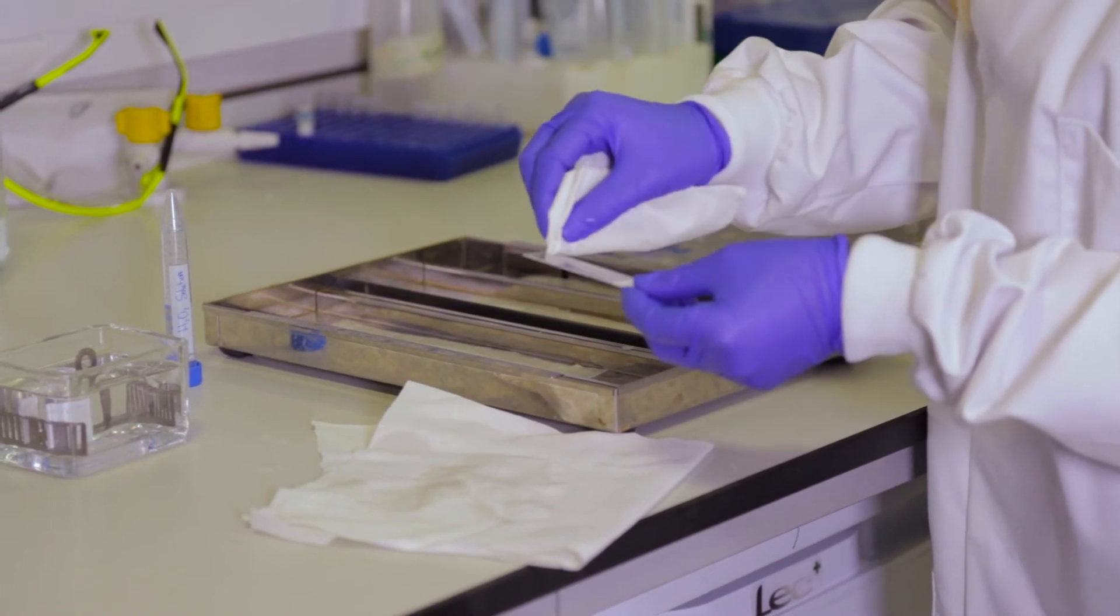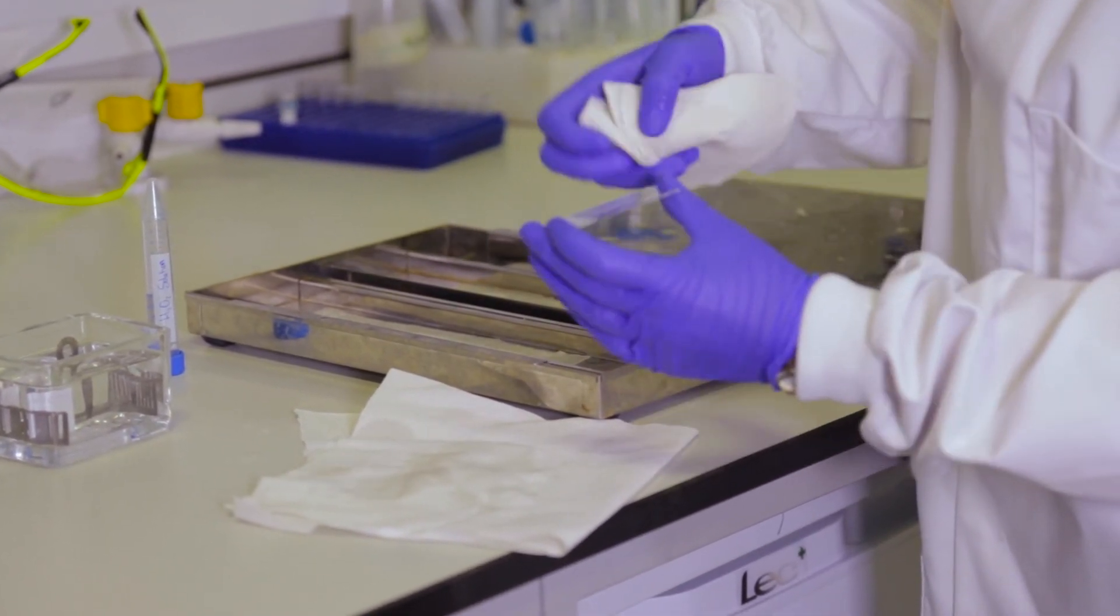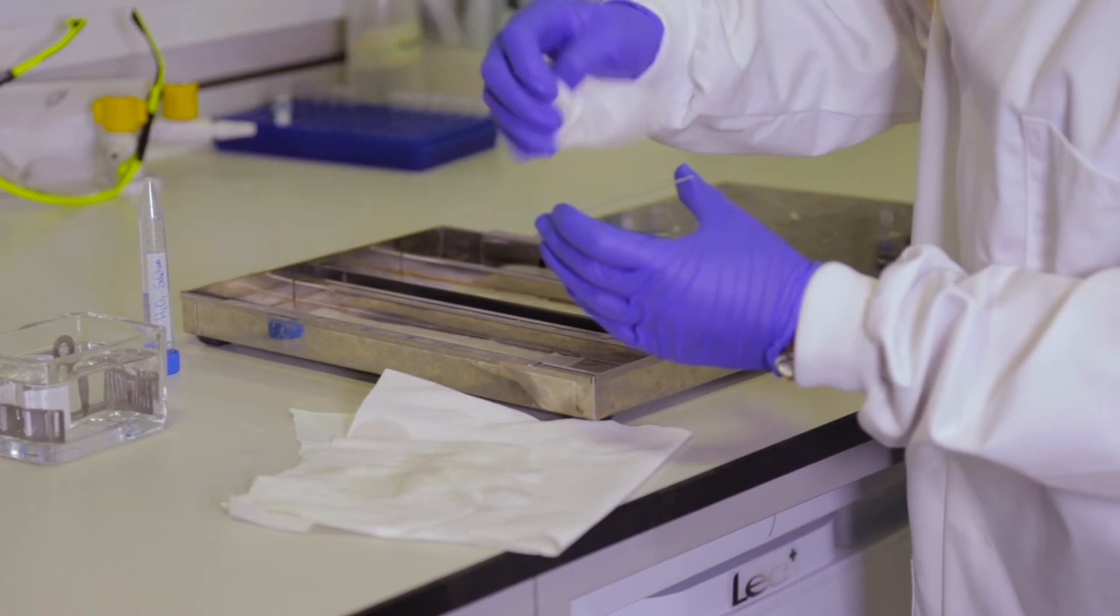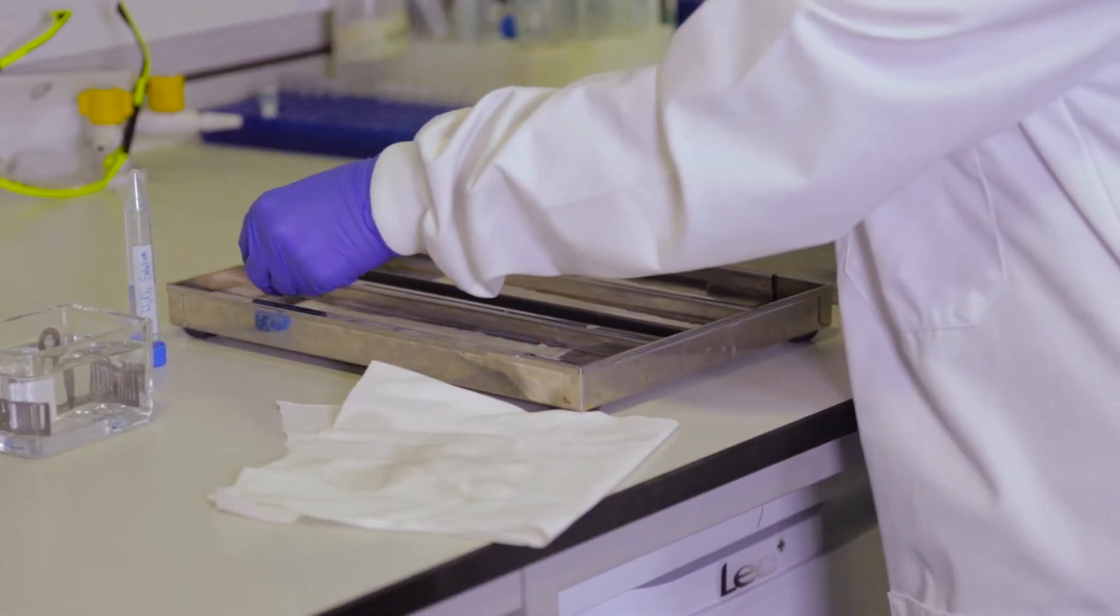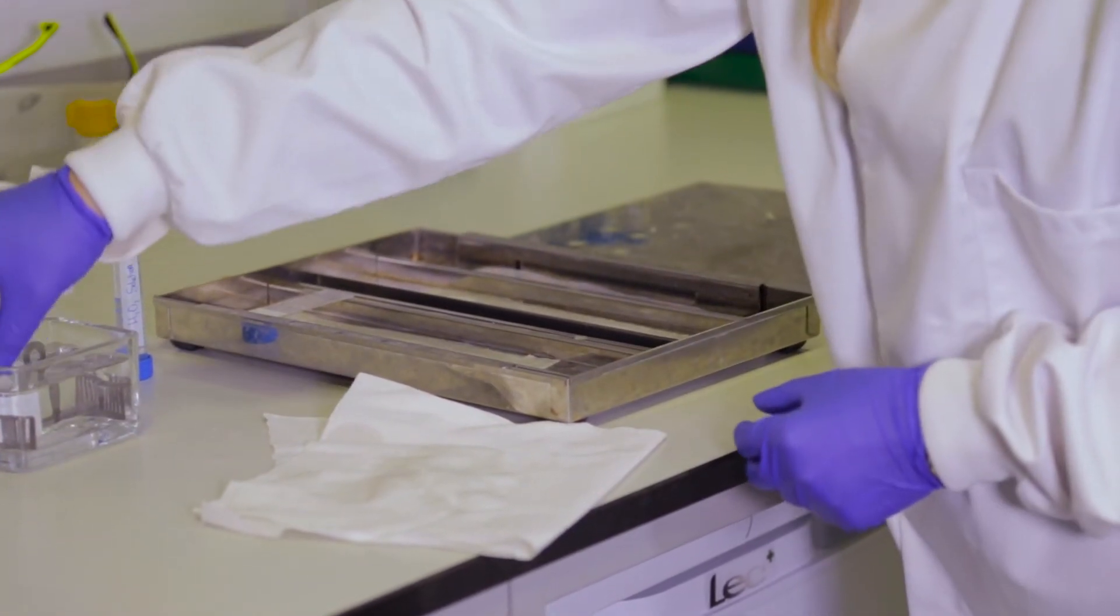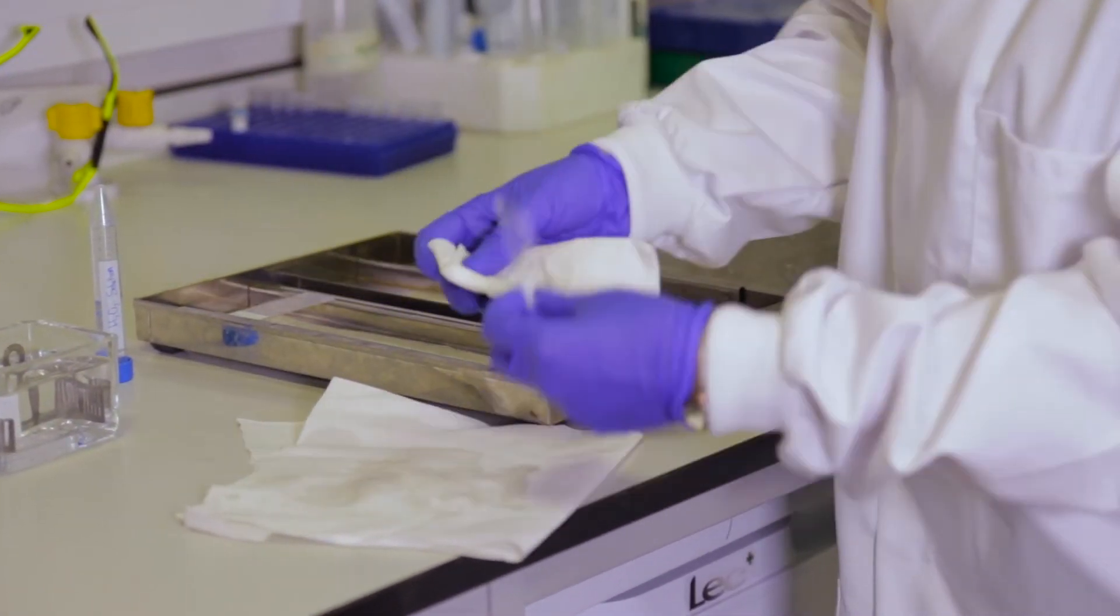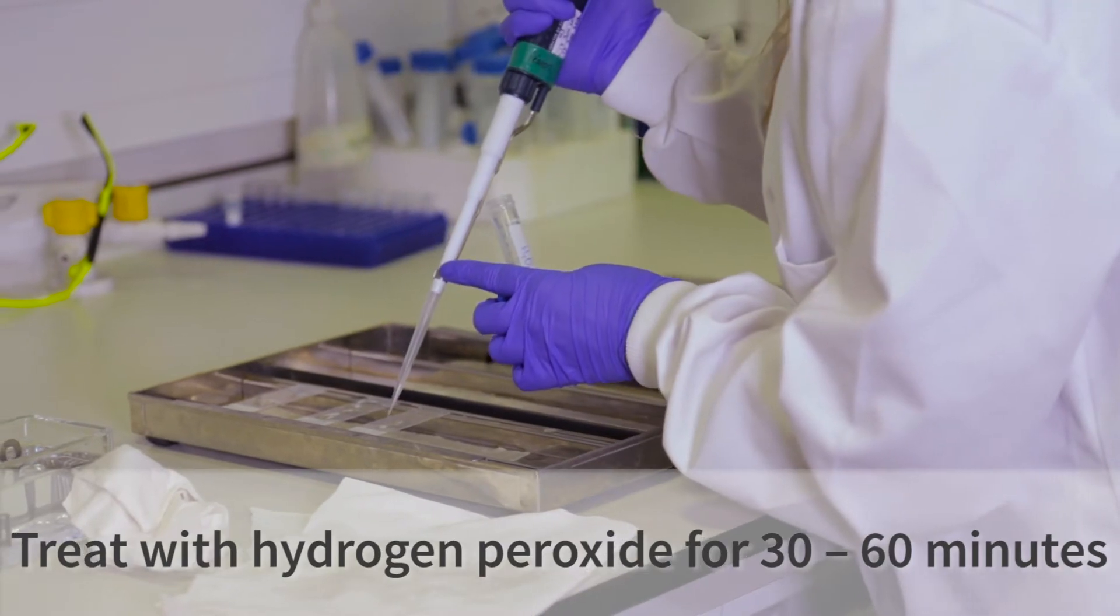The next step is to quench the endogenous peroxidase. To do this, remove the slides from the PBS and dry them on the back and the sides, ensuring not to damage the tissue on the front. After this, place them in an immunostaining tray. The tray should have some damp tissue in the bottom of it to prevent the slides from dehydrating during the protocol. You then pipette on the hydrogen peroxide solution.